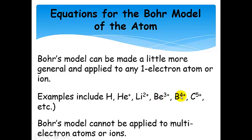So three electrons from beryllium, four electrons from boron. And so the Bohr model does a good job of predicting the lines for any of these ions in addition to hydrogen. Now, it's really important to note that Bohr's model cannot be applied to any multi-electron atoms or ions.